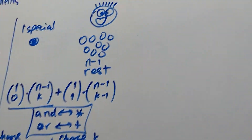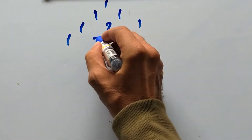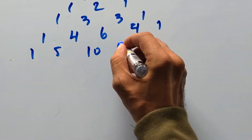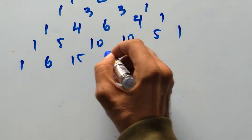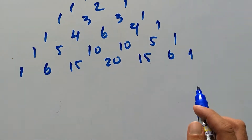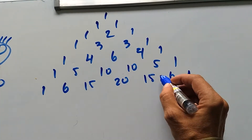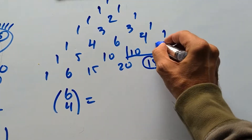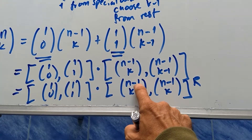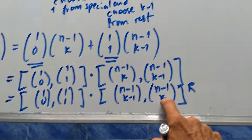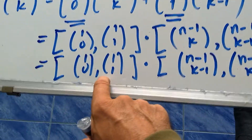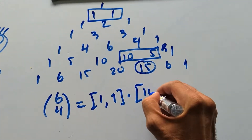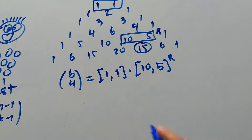Let's try to visualize this using Pascal's triangle. Say we want to compute 6 choose 4. I will take the row entries 5 choose 3 and 5 choose 4. That's these two here — reverse them, and take the dot product with the (1,1) row up here. We get 1,1 dot product with 10, 5 reversed, which gives 15. That's correct — quite beautiful.